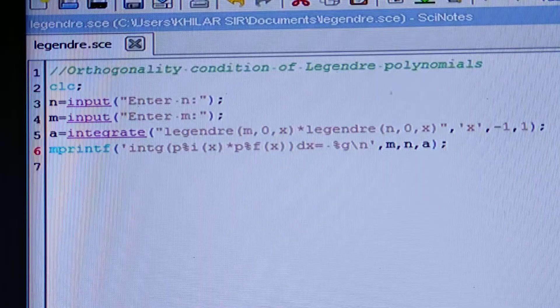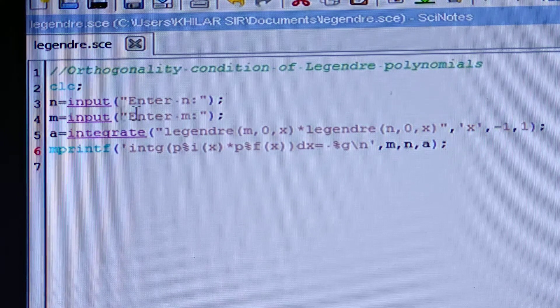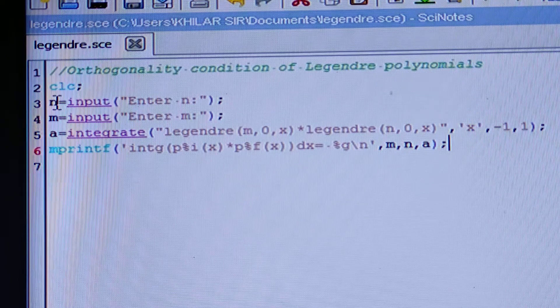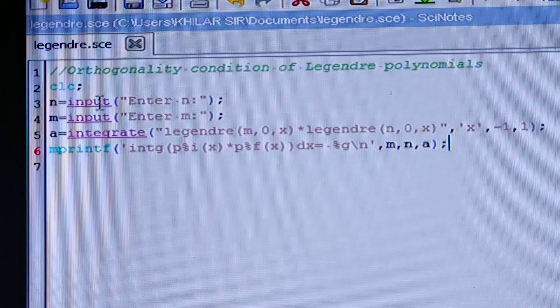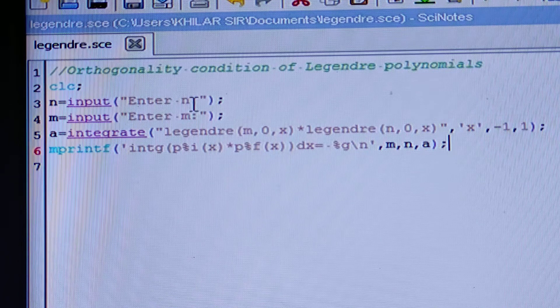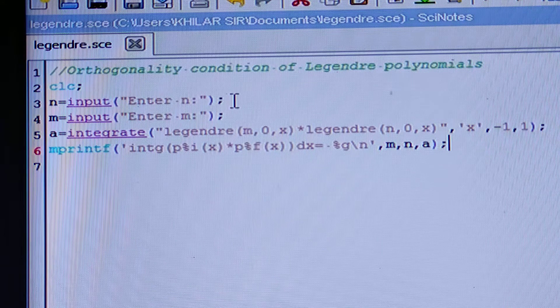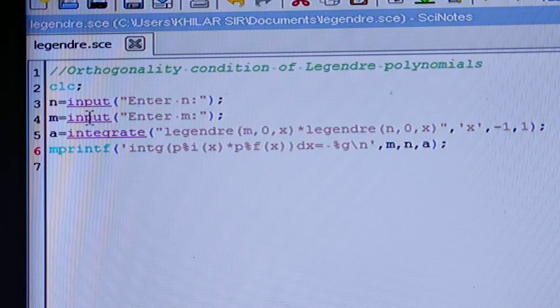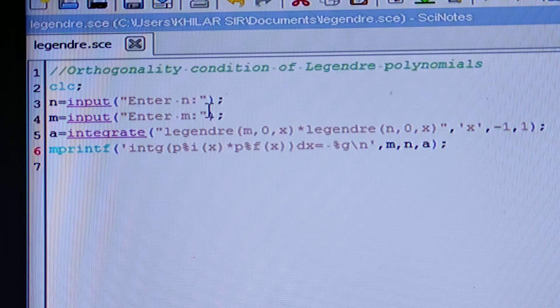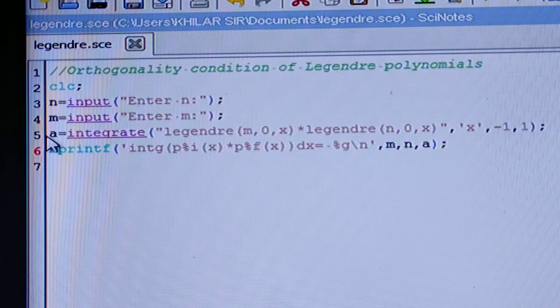See here, our aim is to find out the orthogonality condition of Legendre polynomial. So first of all, you should write 'clear', then N, which is input. You have to give the value of N: enter N colon (not semicolon, colon), and you should write within double inverted comma. Then semicolon. Then M is equal to input, enter M, then colon, double inverted comma, and semicolon.